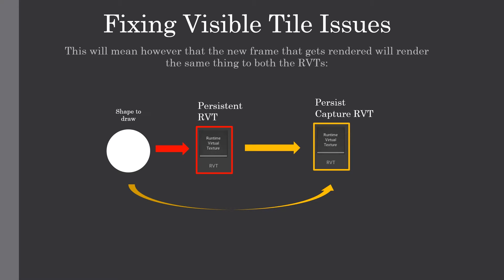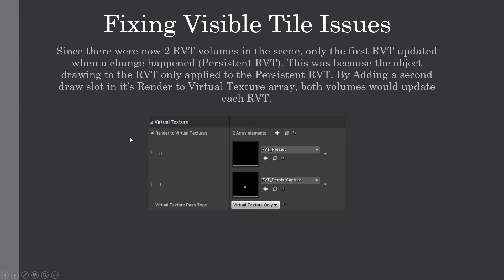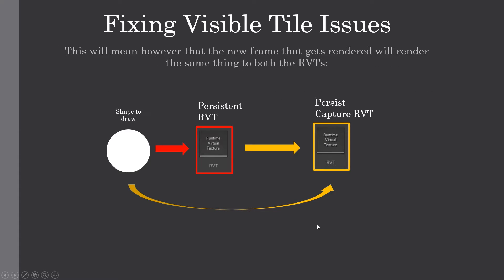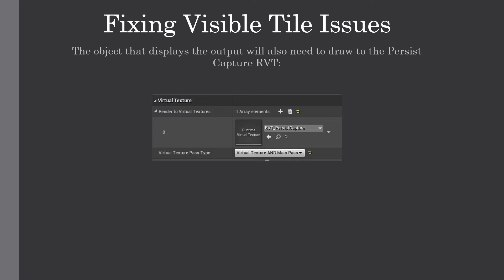However, the new frame rendered will render the same thing to both Runtime Virtual Textures. The shape gets rendered to the persistent RVT, then the complete result gets rendered to the Capture RVT. But since that setting is also enabled, the shape gets drawn over the top of that — but it's only the new shape in the current frame, not all previous data. So we're adding this new shape onto the previous data, which already includes that shape we just drew. The object displaying the output will also need to draw to the persistent Capture Runtime Virtual Texture.